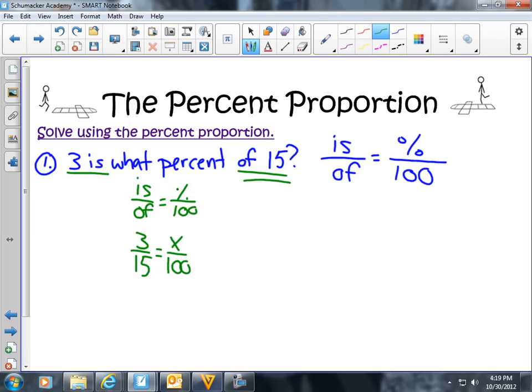Now we're going to cross multiply. So we're going to do 15 times x. You always want to multiply up and over. 15 times x is 15x equals 3 times 100 is 300. Then we're going to divide both sides by 15 because we want to get x by itself. We have to get rid of the 15, so we're going to divide it by 15. Cancel it out.